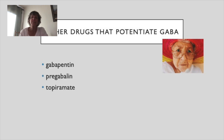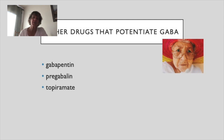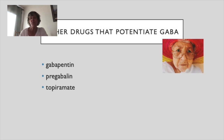Other drugs that potentiate GABA include gabapentin and pregabalin — you can notice 'GABA' in the name. Topiramate is another medication that increases GABA. Some of these GABA medications may also be used to treat neuropathy or nerve pain, which makes sense because calming these nerves down can be beneficial for that.